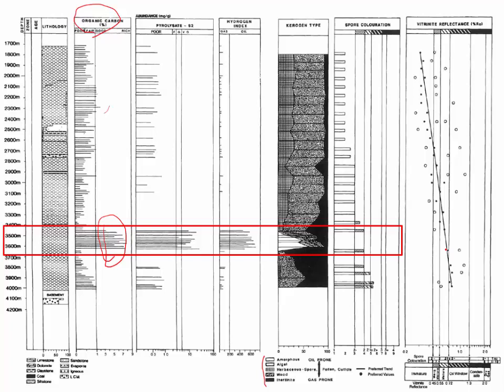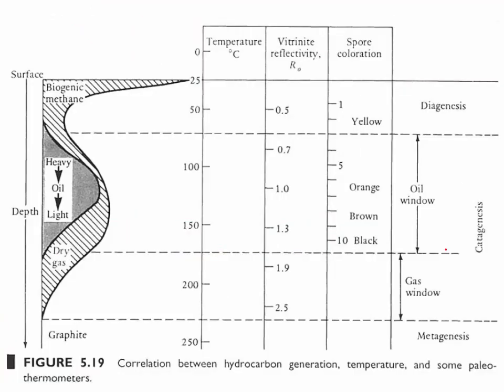As depth increases, the windows for oil and gas generation are different. At a certain depth range, you have an oil window where the temperature is proper for oil generation from kerogen. At deeper regions, you have a gas window.